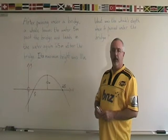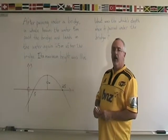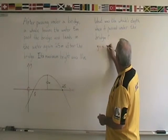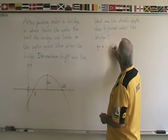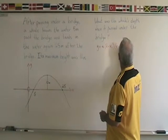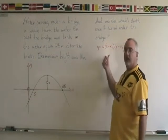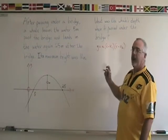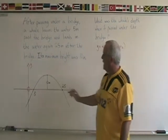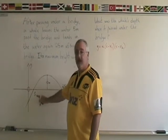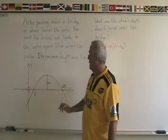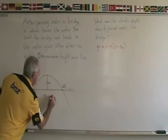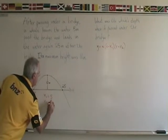There are two different ways of solving this problem. We are going to use the form y equals a times (x minus x1) times (x minus x2). To use this form, I must know my x-values and one other point. My x-values are the zeros: 5 and 25. So x1 equals 5 and x2 equals 25.